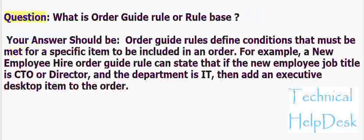Question: What is an order guide rule or rule base? Order guide rules define conditions that must be met for a specific item to be included in an order. For example, a new employee hire order guide rule can state that if the new employee job title is CTO or director, and the department is IT, then add an executive desktop item to the order.